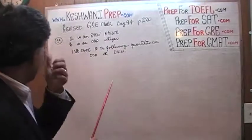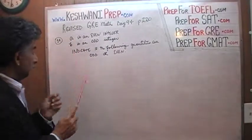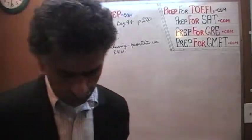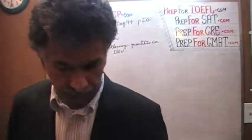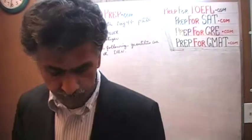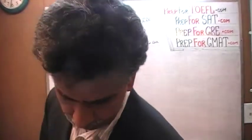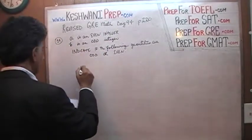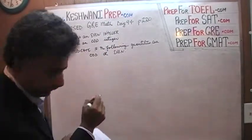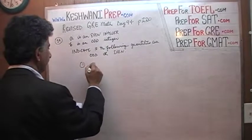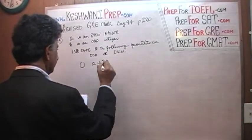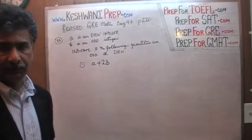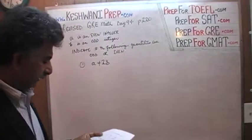The problem says: integer a is an even integer, and b is an odd integer. We are given a whole bunch of quantities, and our job is simply to indicate whether these quantities are odd or even. Let's begin. The very first one is a plus two times b. What they're trying to test here are the concepts we're going to put on the side.